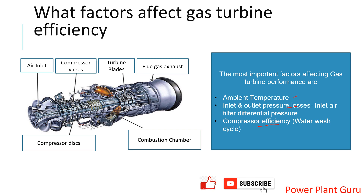We know that gas turbines usually take a lot of air for functioning. When you have ambient temperature lower than normal, the density of the air at that temperature will be higher compared to higher temperatures. Lower temperature definitely means higher density. So in the same volume, you are pushing more quantity of air, and as you push more air, you can inject more fuel as well. In turn, you get a higher output. Higher density of air is the deciding factor.